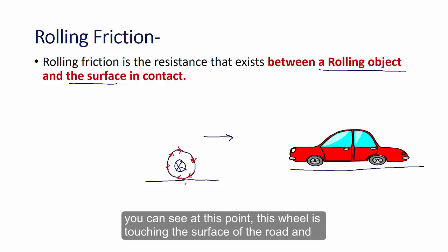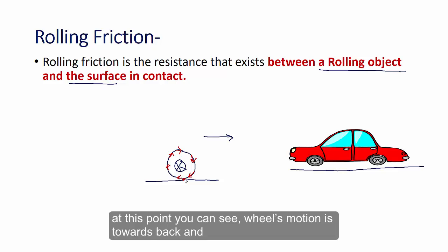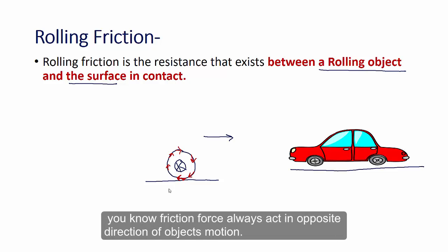You can see at this point this wheel is touching the surface of the road. And at this point you can see wheel motion is towards back. And you know friction force always acts in opposite direction of object's motion.